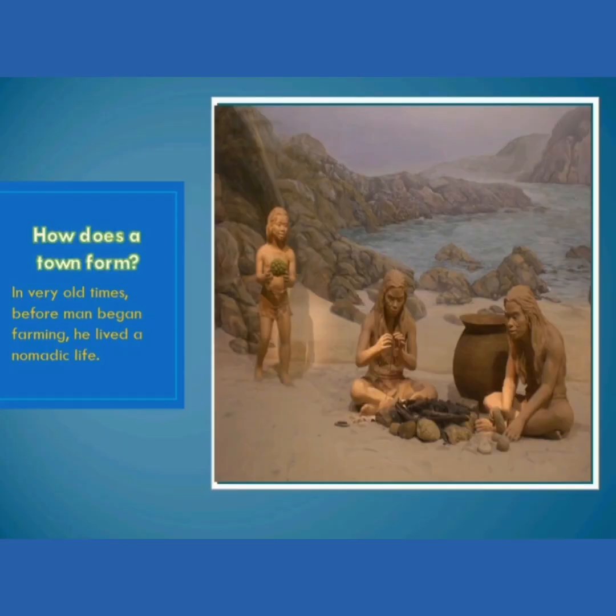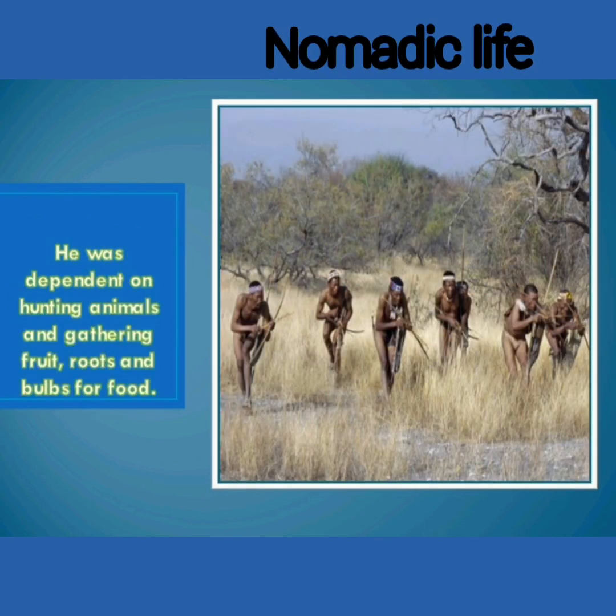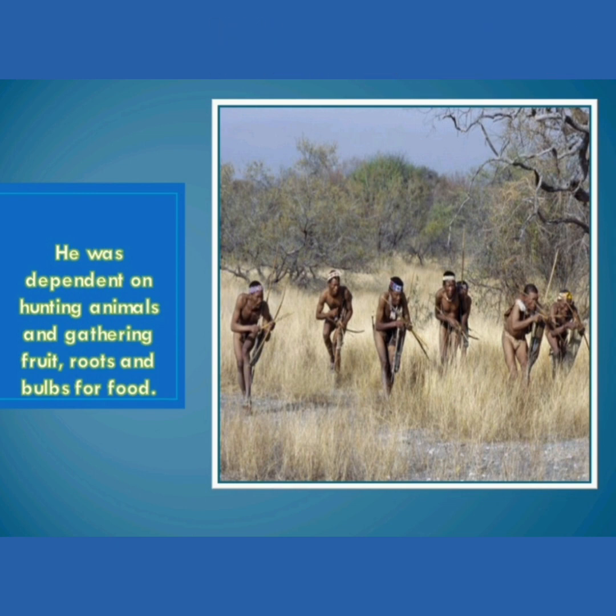Let's see how a town forms. In very old times, before man began farming, he lived a nomadic life. He was dependent on hunting animals and gathering fruit, roots and bulbs for food.